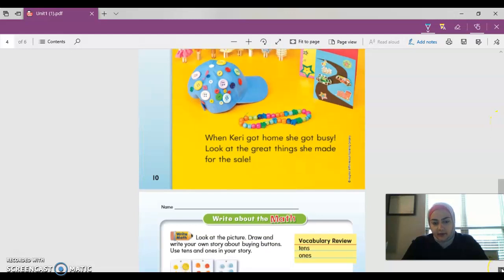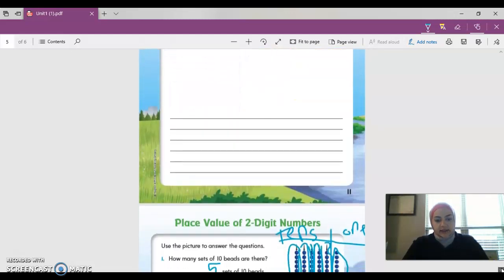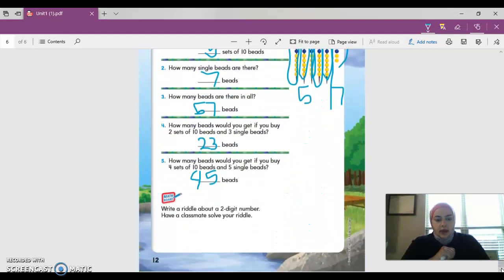Write a riddle about a two-digit number. Have a classmate solve your riddle. So you obviously don't have anyone to solve your riddle, but you can write a riddle. A riddle is like a question, so just write a question about a two-digit number. You can basically rewrite this question and just change the sets of 10 beads and the sets of single beads. Change the numbers, and boom, you have a new question with a new answer.